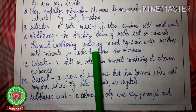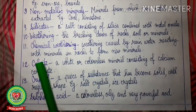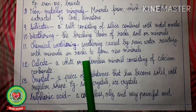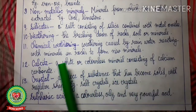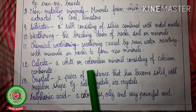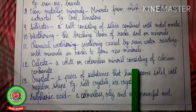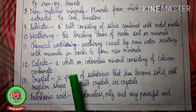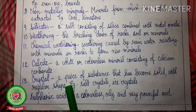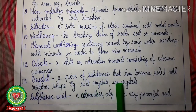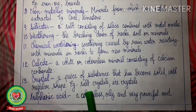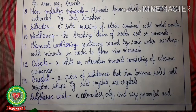Chemical weathering — weathering caused by rain water reacting with minerals in rocks to form new minerals. Calcite — a white or colorless mineral consisting of calcium carbonate. Crystal — a piece of substance that has become solid with a regular shape. Examples: Salt Crystal, Ice Crystal or Sugar Crystal. Sulphuric Acid — a colorless, oily and very powerful acid.